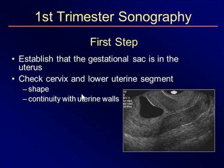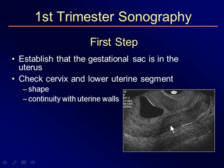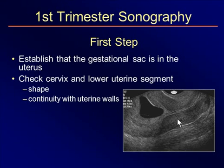I always caution people that when they start doing first trimester scanning — which is almost all vaginal approach because these are early pregnancies — the first step before you start looking in the uterus is to check the cervix and make sure that the gestational sac is in the uterus. Make sure the cervix connects with the lower uterine segment, that the anterior cervical wall connects with the anterior uterine wall, and that the posterior cervical wall attaches with the posterior uterine wall. That way you are sure this is indeed an intrauterine pregnancy. We do not want to miss abdominal pregnancies or misinterpret an ectopic for an intrauterine pregnancy or vice versa.